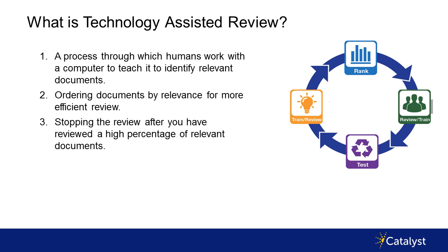What is technology-assisted review? Really three things in my mind, all pretty obvious. One is it's a process through which humans work with a computer to teach it to identify relevant documents — machine learning. Two, it is the feedback from the computer where it orders the documents by likelihood of relevance, which means you can review more efficiently; the topics are similar and you're getting to the good stuff first. Three is frankly optional: the courts have agreed that you can stop your review after you've reviewed a high percentage of relevant documents.